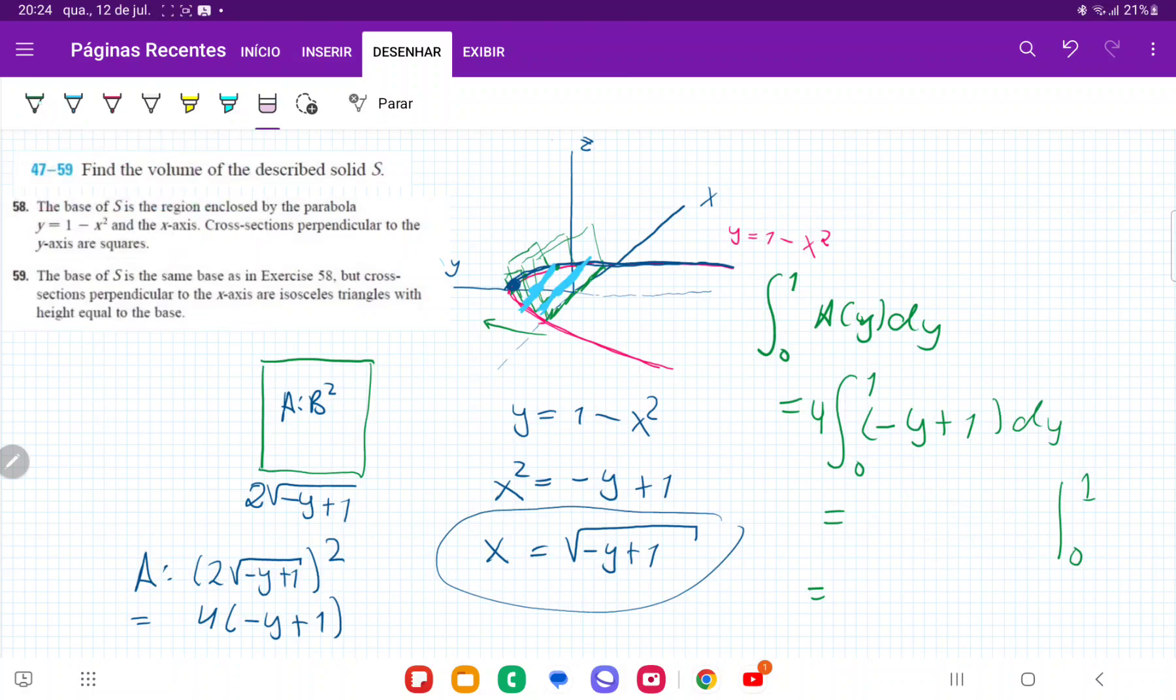Let me redo this so that it looks a little bit better. 4, I'm going to put that outside. So minus y squared over 2 plus y, which is equal to 4 times, let's see, this is minus 1 half plus 1, minus 1 half plus 1, and then minus 0. So we don't count that, which is equal to 2.